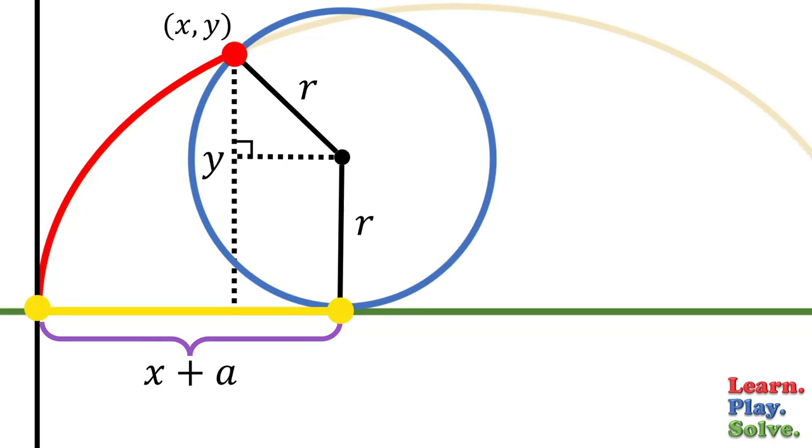This distance must also be equal to the arc length of the circle. And the arc length of any circle is equal to the measure of the angle that traces out that arc times the radius of that same circle. So this distance is r theta, which means x plus a is r theta.